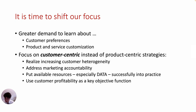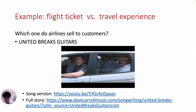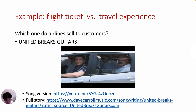To do so, companies have started using customer profitability as the key objective function. For example, which one do you think airlines sell to customers — flight tickets or travel experience? From the traditional product-centric perspective, airlines sell just flight tickets or travel. But the customer-centric perspective says they sell experience in the sky.